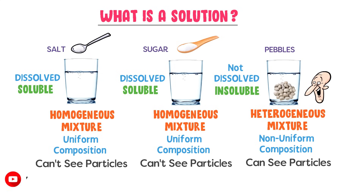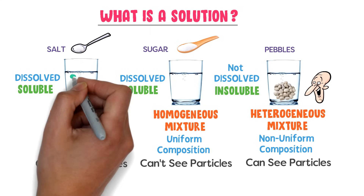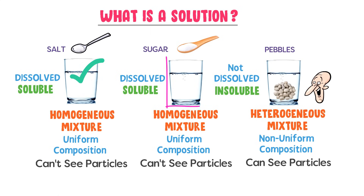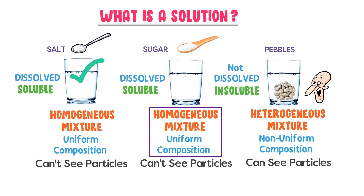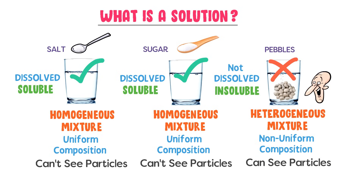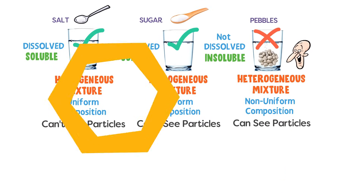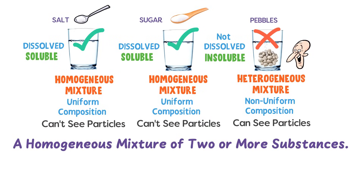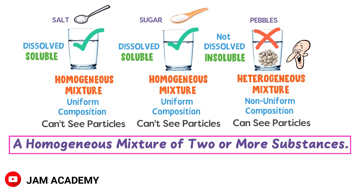Salt and water are soluble in each other to form a homogeneous mixture, so it is a solution. Sugar and water are also soluble in each other to form a homogeneous mixture, so it is also a solution. Pebbles are insoluble in water and form a heterogeneous mixture, so it is not a solution. Therefore, we define a solution as: a homogeneous mixture of two or more substances is called a solution.